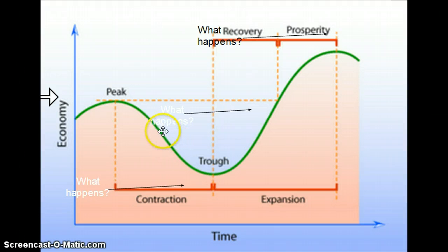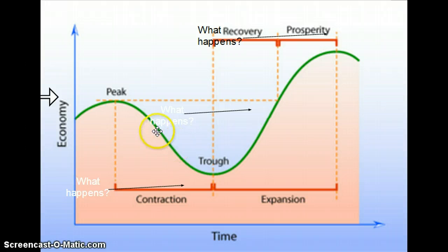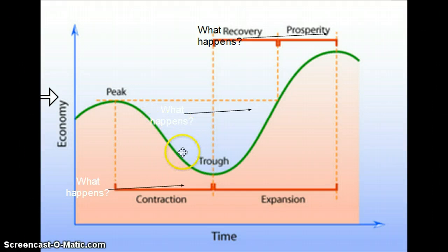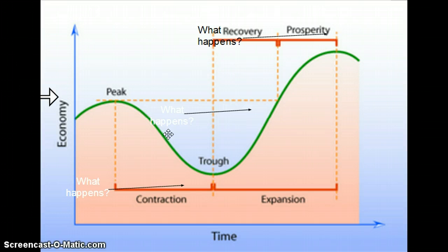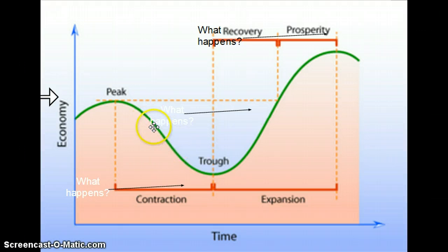We'll talk more about stagflation in class. If this period of contraction gets very bad, we could enter a recession. A recession is defined as two consecutive quarters of declining GDP. Depressions don't have a formal definition — they're essentially an extended recession. Our only real historical example is the Great Depression of the 1930s. During this time GDP is very low, and manufacturers aren't producing much, so GDP numbers are low or even negative.